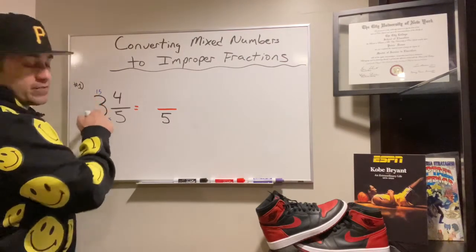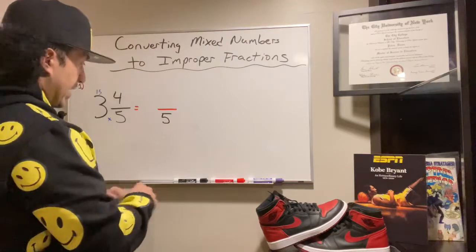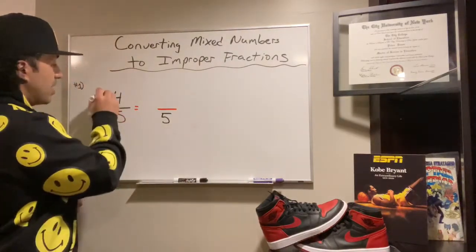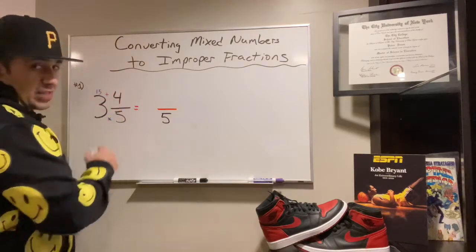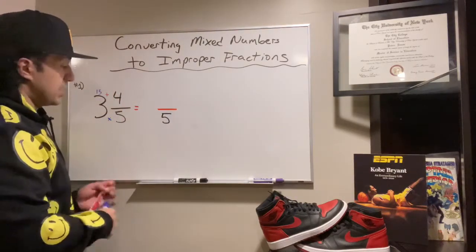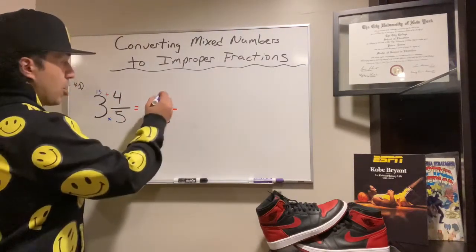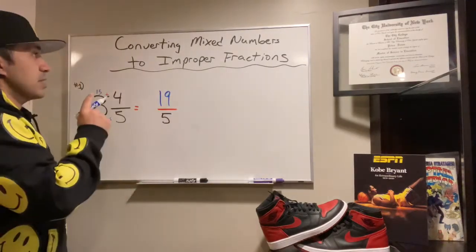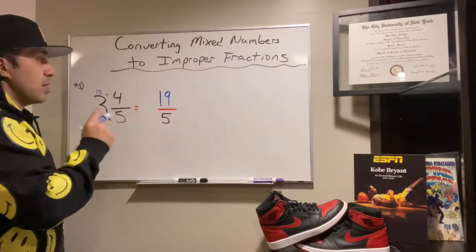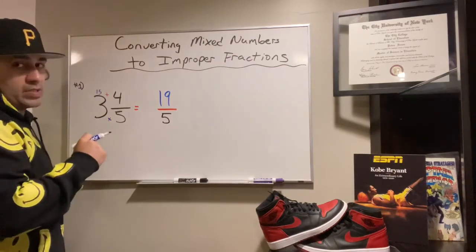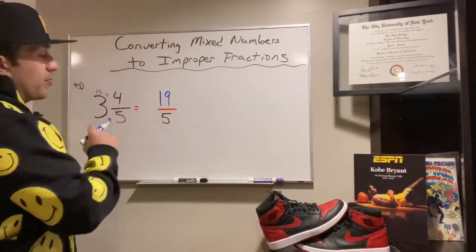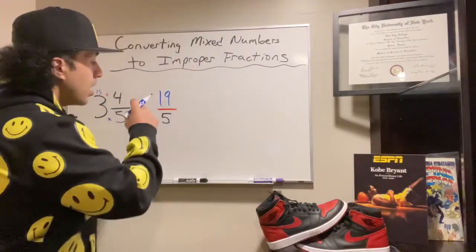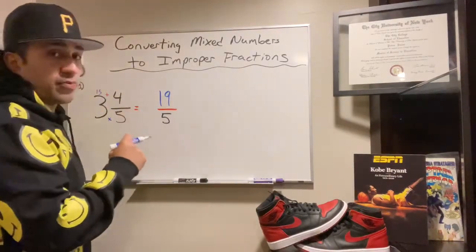Now I'm going to use addition — I'm going to add 15 and the number four. 15 plus 4 gives me a sum of 19. So the mixed number of three and four-fifths converts to the improper fraction of 19 over 5.